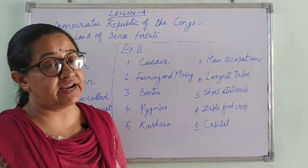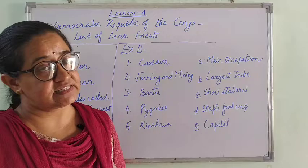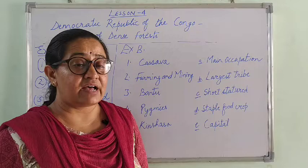We also read about an important feature of this country, that is the River Congo which flows through it. It is also called the Zaire River and is the second longest river of Africa.